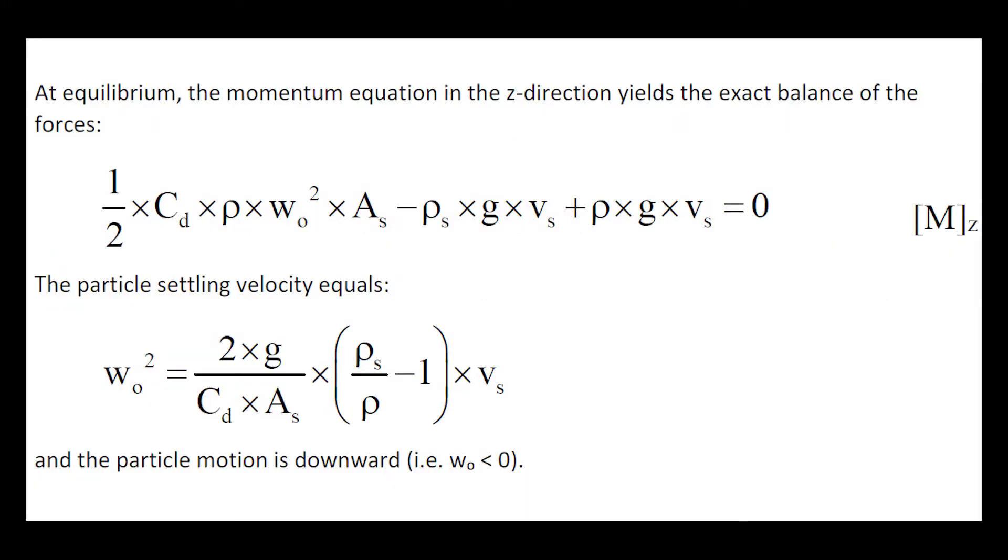After equilibrium, the momentum equation in the vertical z-direction yields an exact balance of the forces, and hence we obtain an expression with the particle motion being downward, namely the particle fall velocity being negative.